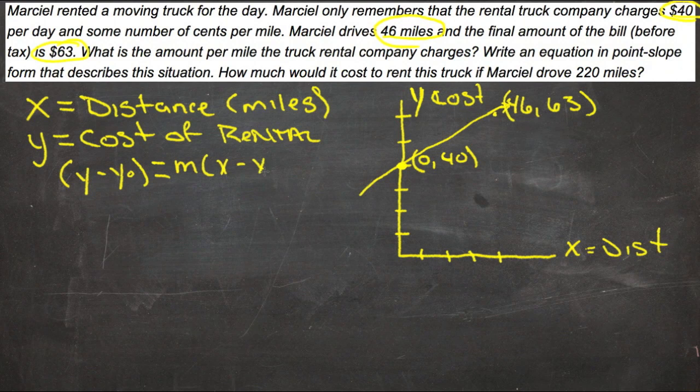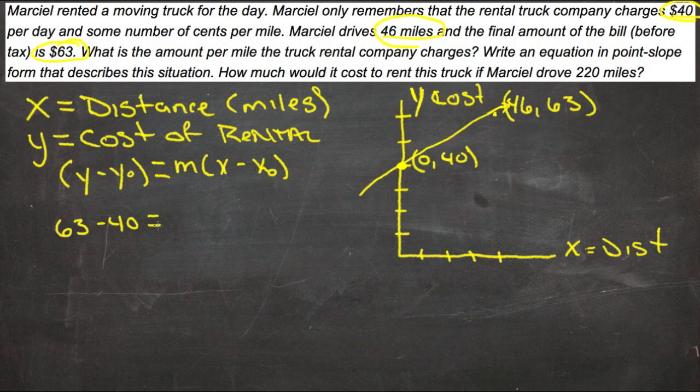We'll plug our information in. We have two y points, 63 and 40, so we'll do 63 minus 40 is equal to m, which is what we need to solve for at this point, times 46 minus 0.